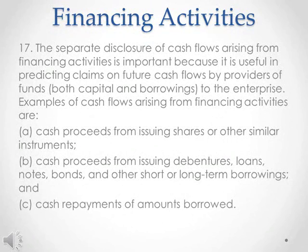Financing Activities, Paragraph 17. The separate disclosure of cash flows arising from financing activities is important because it is useful in predicting claims on future cash flows by providers of funds, both capital and borrowings, to the enterprise. Examples of cash flows arising from financing activities are: A. Cash proceeds from issuing shares or other similar instruments. B. Cash proceeds from issuing debentures, loans, notes, bonds, and other short- or long-term borrowings. C. Cash repayments of amounts borrowed.